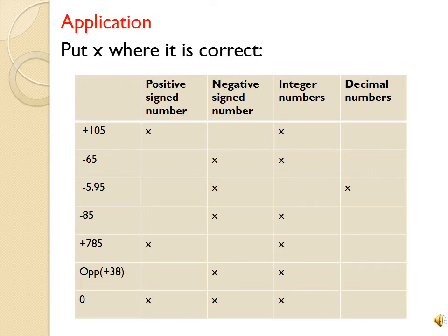Minus 65 — أنا قلت minus, so أكيد هو negative, مش positive. So I put X under the negative signed number, وبحط كمان X under the integer — not a decimal, because it doesn't contain any decimal point, يعني ما في بقلبه نقطة. Next: minus 5.95 — it is negative, and it is a decimal number, and not an integer, because it contains a decimal point.